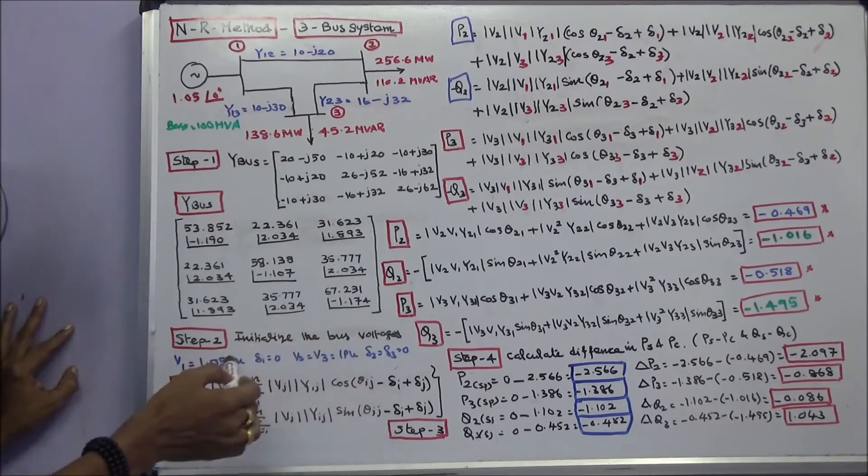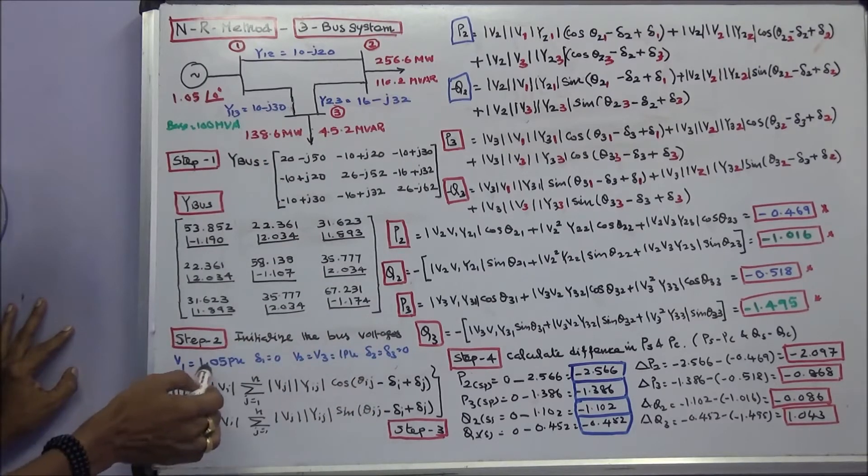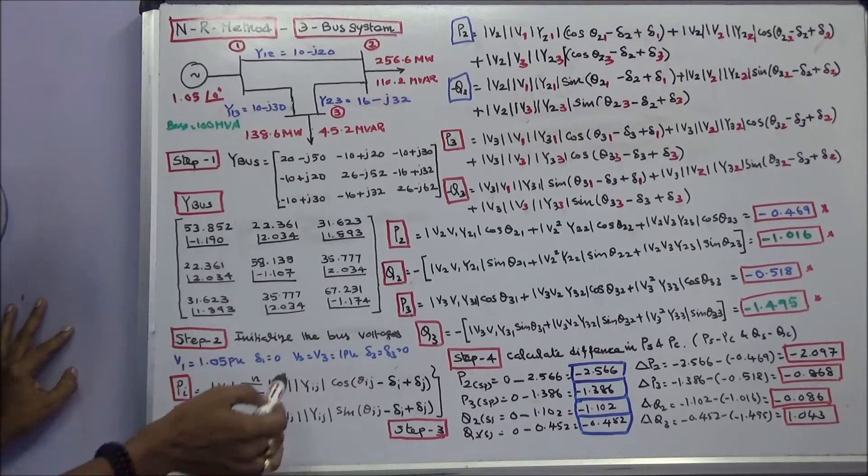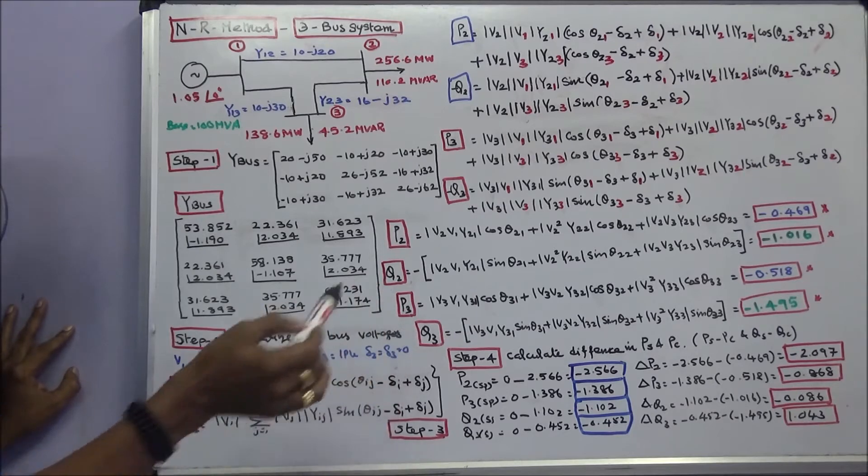Second step, initialize the bus voltages. Here V1 is equal to 1.05 per unit, delta 1 is equal to zero. V2 is equal to V3 is equal to 1 per unit. Delta 2, delta 3 is equal to zero.